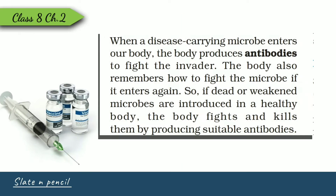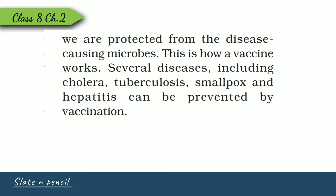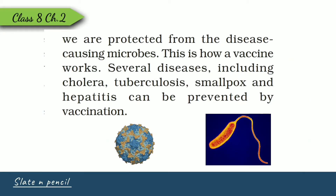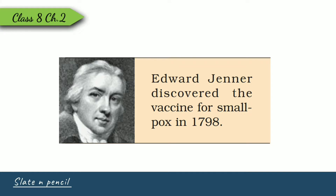A vaccine is a biological preparation containing inactive or killed microbes. It helps provide memory to the immune system of the body — antibodies are formed and stored, so that the next time the same microbe enters the body, it will be eliminated quickly. Diseases like polio, smallpox, cholera, hepatitis, and tuberculosis can be prevented by vaccination. Edward Jenner in 1798 first discovered the vaccine for smallpox.